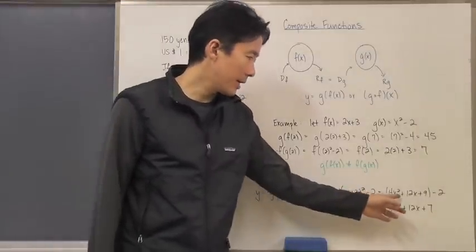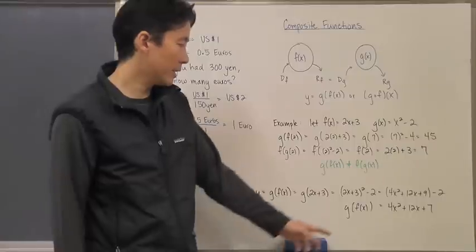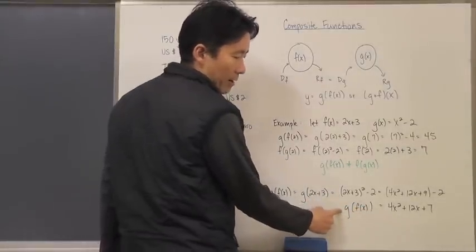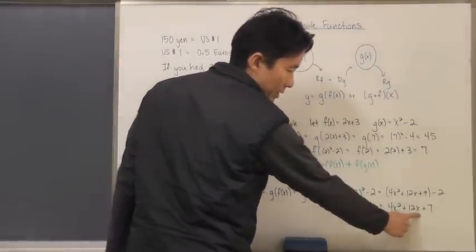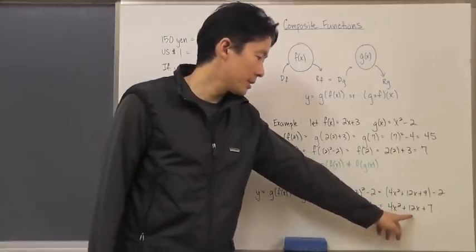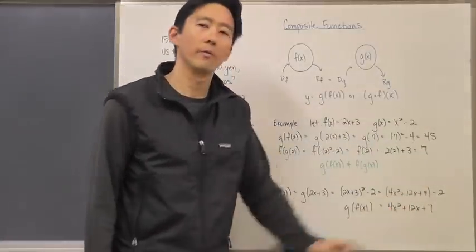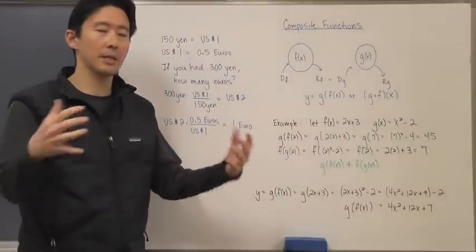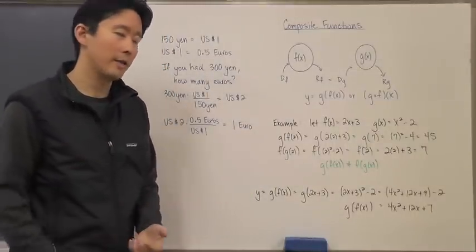I expand that using FOIL, and if I subtract 2, this composite function right here could actually be just written once this way. And if I substitute it into 2 here, I can just substitute it into this equation here and again I'd come up with 45 directly.